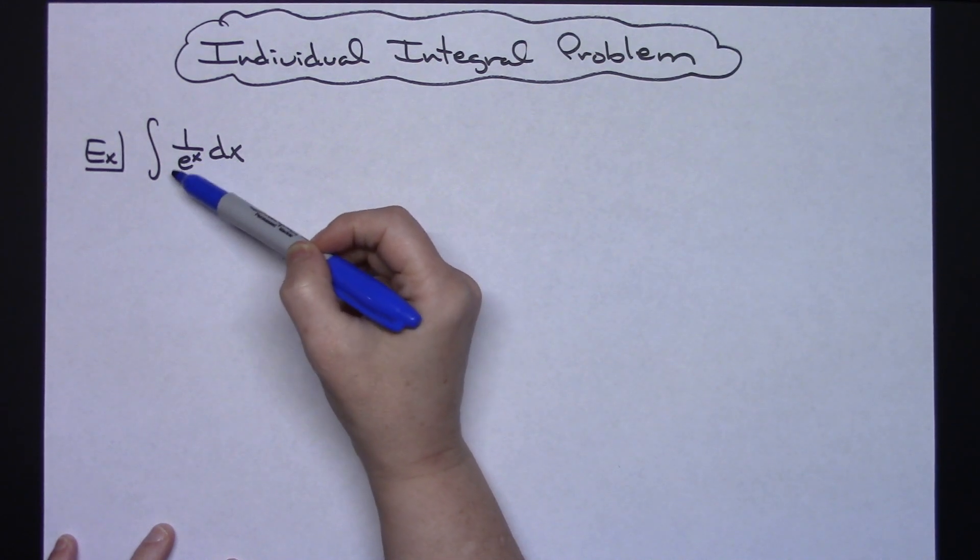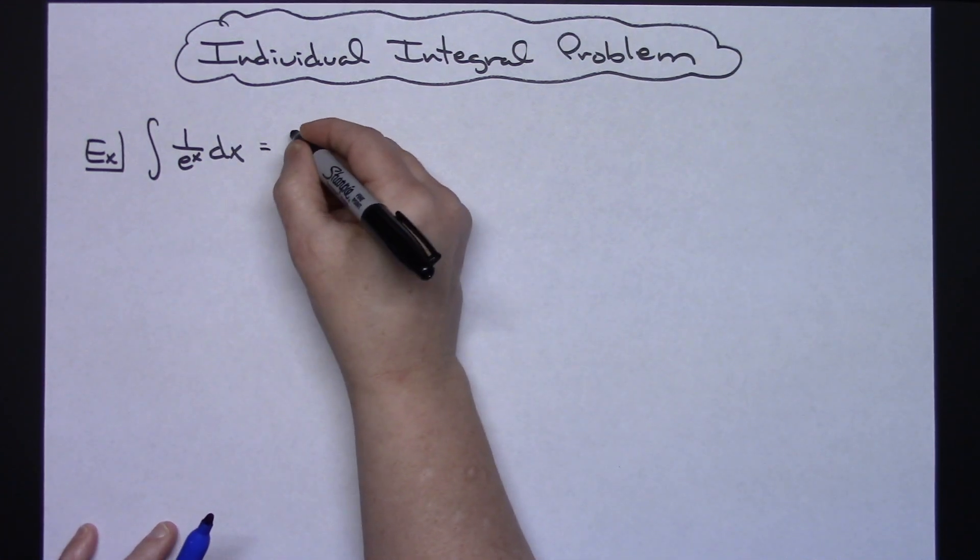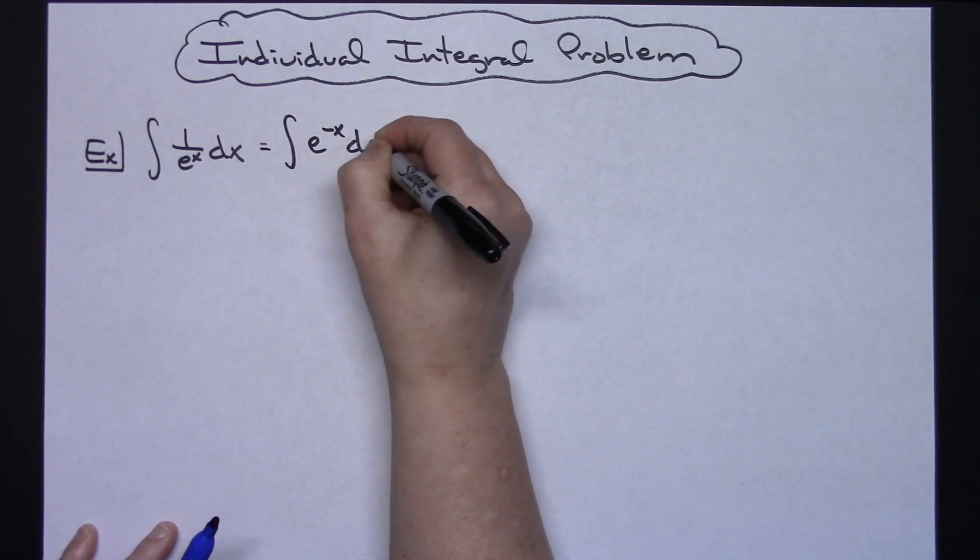We've got the integral of 1 over e to the x dx. So the first thing I'm going to do is implement a law of exponents. I'm going to move that e to the x up to the top and make it negative. So then I'm going to have the integral of e to the negative x dx.